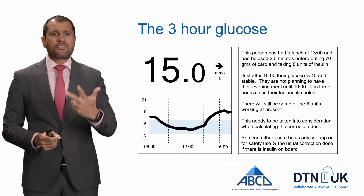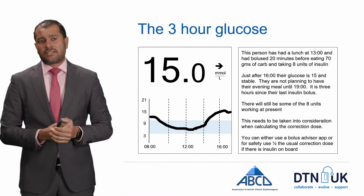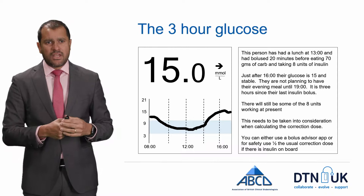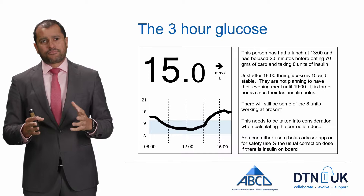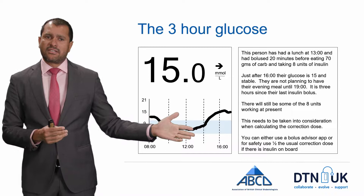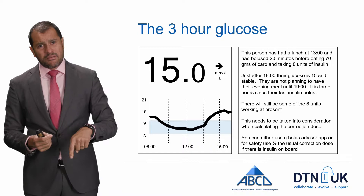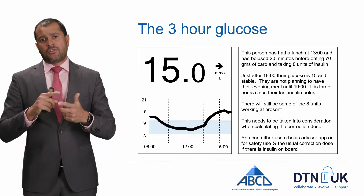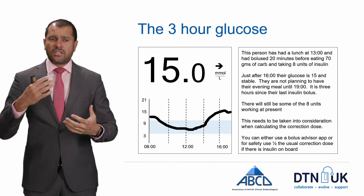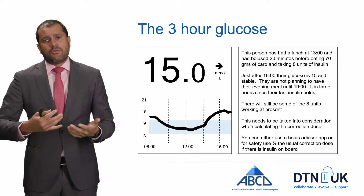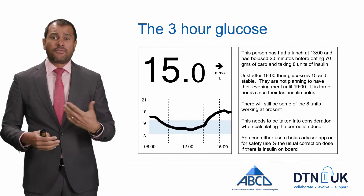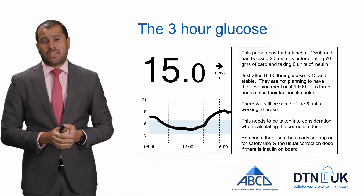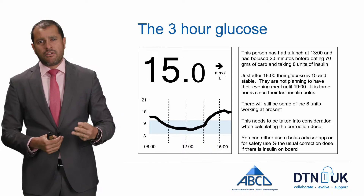Moving on to the three-hour glucose: in this example someone had lunch at 1 o'clock with 70 grams of carb and took 8 units of insulin (meal plus correction), and three hours later the sugar is 15 and flat. They're not planning to eat until 7 o'clock and it's been three hours since their last bolus, so some of that insulin is still working. If you're at 15 and want to correct, there are two options: use a bolus advisor app that accounts for insulin on board, or use a simple rule of thumb — do half the correction. If the correction from 15 to 6 would normally be 3 units, in this scenario you might only take 1.5 units. Be cautious when correcting post-meal.